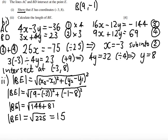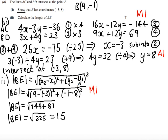For marks on part B: in part B(i) any attempt at simultaneous equations earns a method mark, and correctly solving to get Y equals 8 with working earns the accuracy mark. For part B(ii), a method mark is awarded for demonstrating use of Pythagoras with the difference of the two coordinates, and an accuracy mark for reaching the answer of 15.